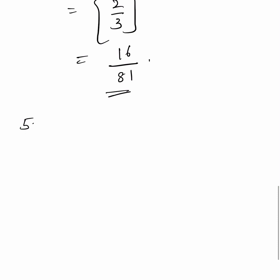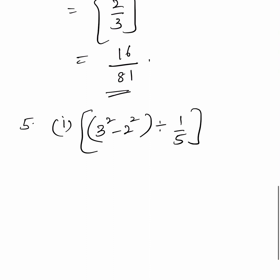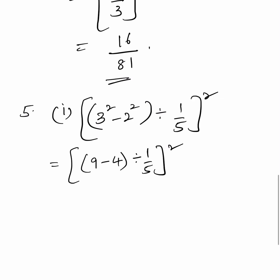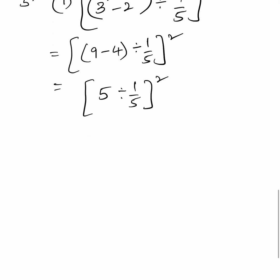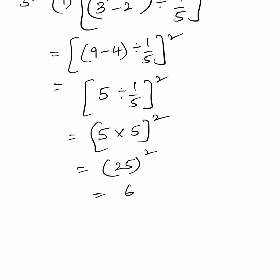Fifth problem, first part: 3 square minus 2 square, divided by 1 by 5 whole square. Here 3 square is 9, minus 2 square is 4, divided by 1 by 5 whole square, that is equal to 5 divided by 1 by 5 whole square. If we are dividing by a fraction we should multiply by its reciprocal: 5 into 5 square, that is equal to 5 cubed, that is equal to 625.